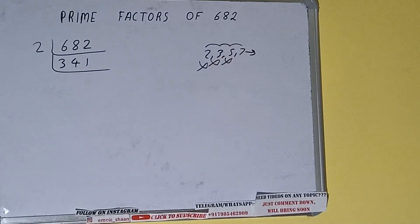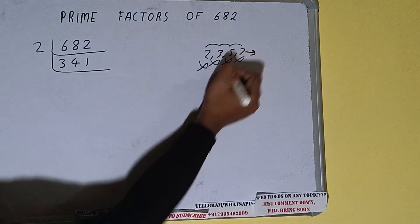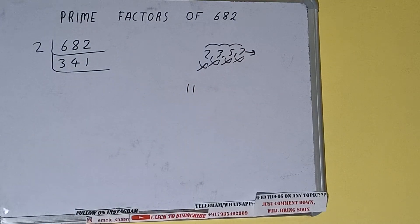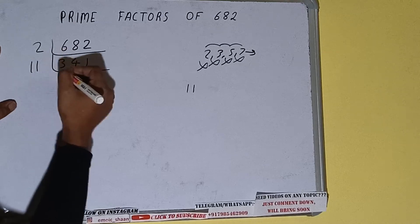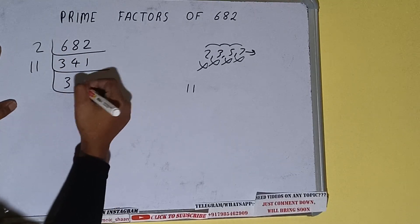Let's check with 7. 4 times 7 is 28, 61. With 7 also not divisible. Let's check with 11. 11 times 3 is 33. With 11 it is divisible. So let's divide. 11 times 3 is 33, 11 times 1 is 11. We'll be having 31.